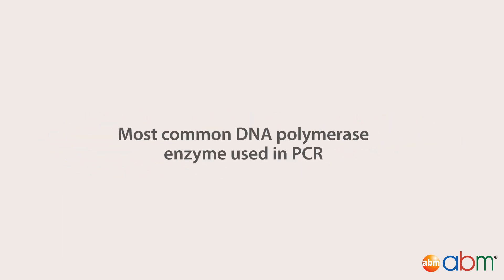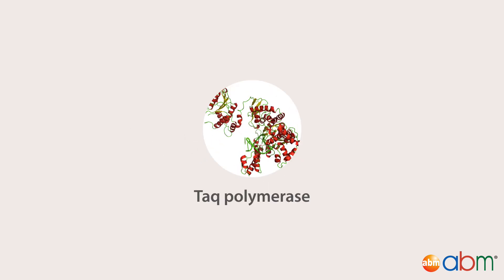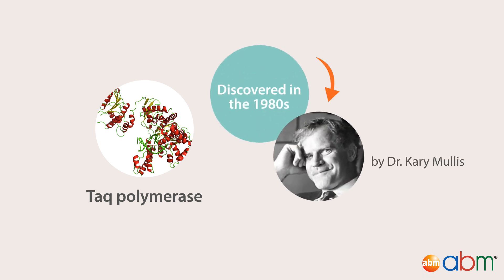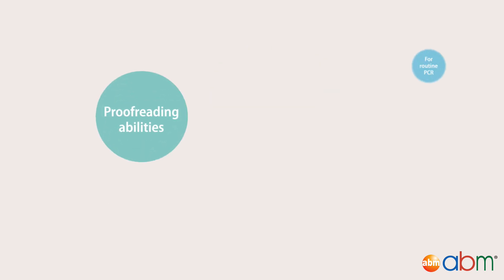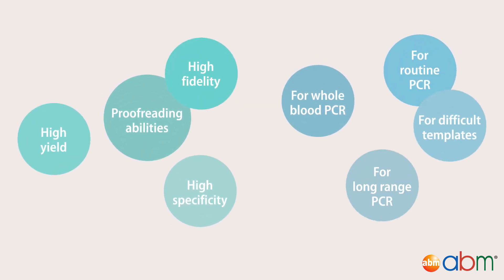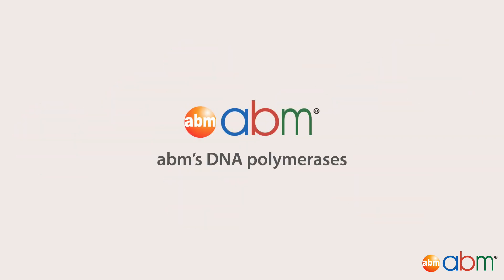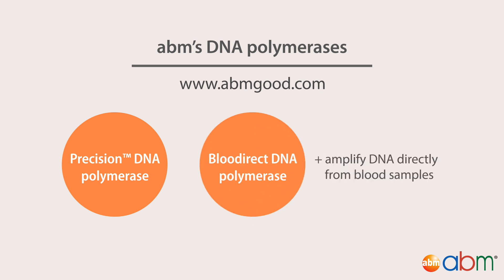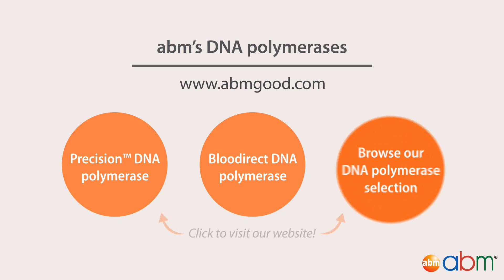The most common DNA polymerase enzyme used in PCR is Taq polymerase, a thermostable DNA polymerase that allows multiple cycles of amplification without the addition of new enzyme after each denaturation step. Since the initial discovery of Taq DNA polymerase, many variations of the Taq enzyme have been engineered with different attributes for specific PCR applications. For example, we at Applied Biological Materials, also known as ABM, carry a modified Taq enzyme that has decreased error rates, and ABM has also engineered a robust Taq enzyme that amplifies DNA directly from blood samples.